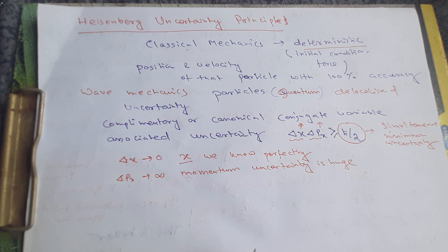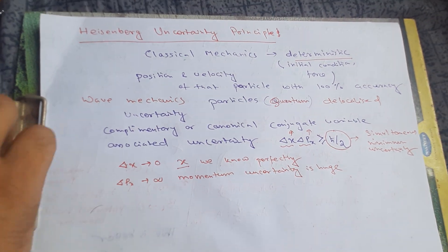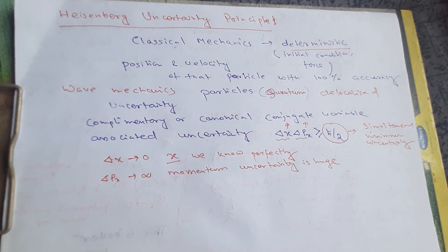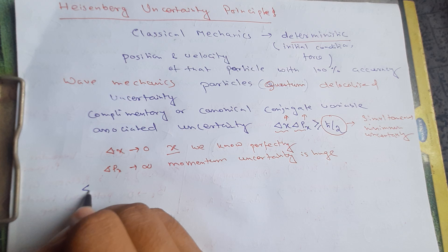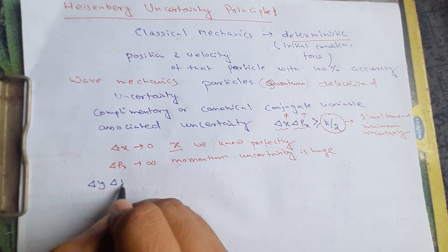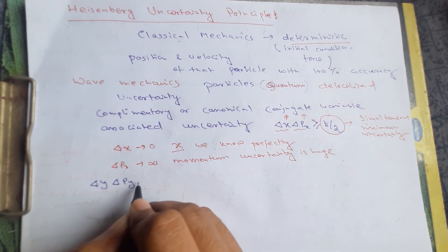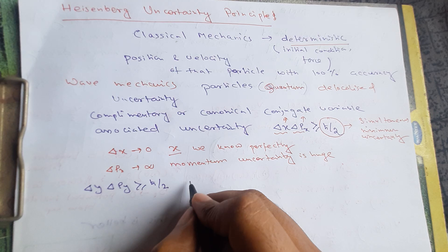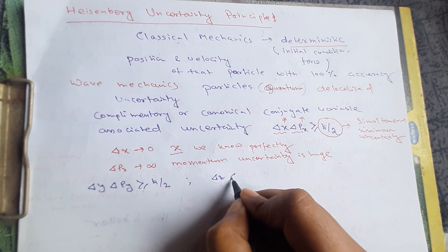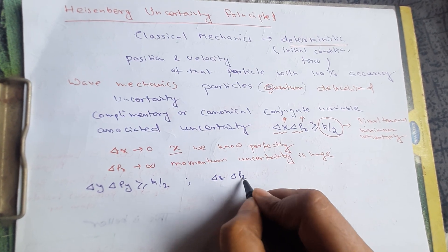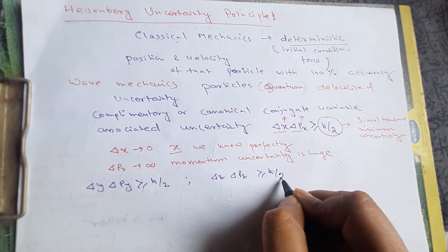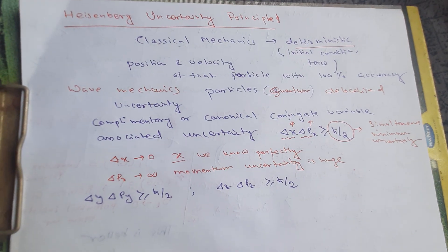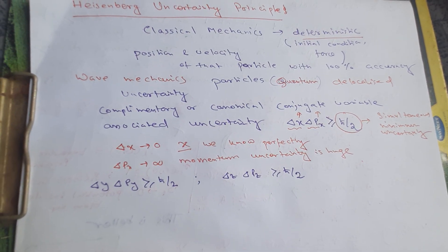This is in 1D. In 3D, there are two additional associated relations: delta y times delta py is also greater than or equal to h-bar over 2, and delta z times delta pz is also greater than or equal to h-bar over 2. So this is the relation for position and momentum.